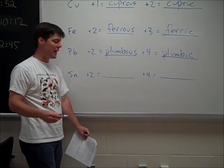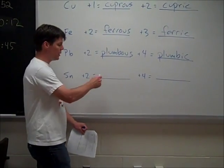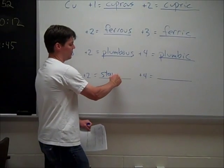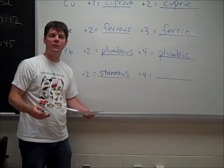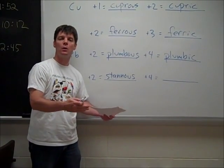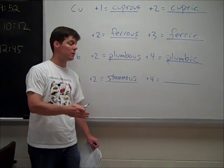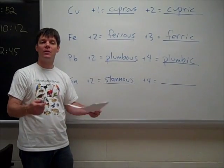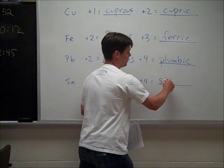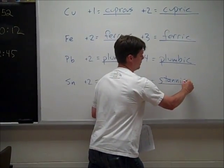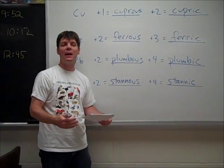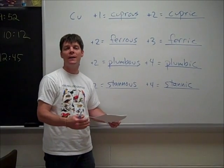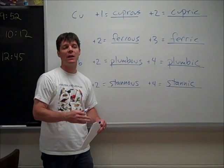Finally we have tin. For tin plus two, that is stannous. Stannous chloride is the same thing as tin two chloride. That would be SnCl2. Tin four is stannic. So stannic chloride is the same thing as tin four chloride. That would have a formula of SnCl4.